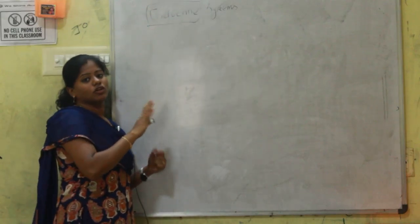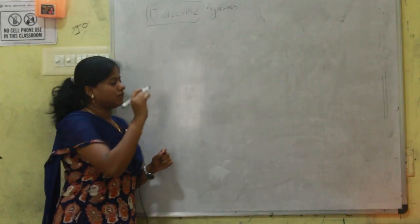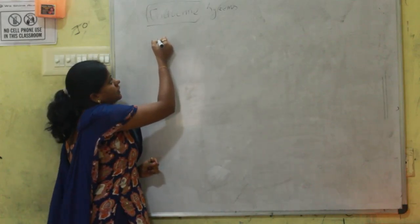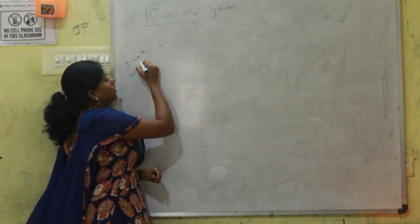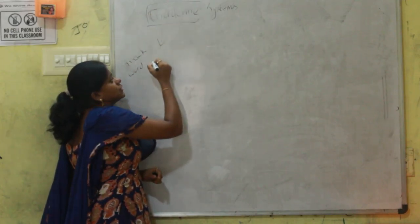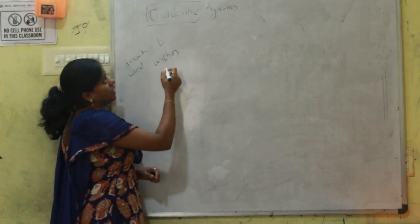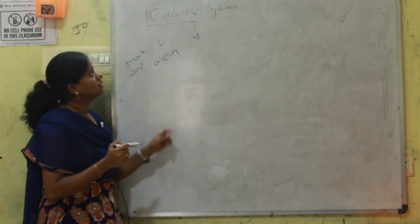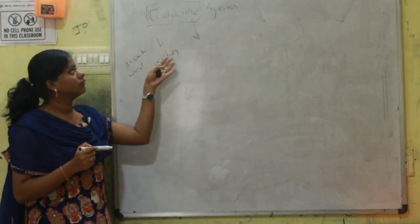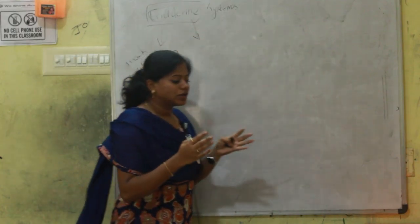Endocrine is actually a Greek word. Endo means within, so present within, and crino means cells. So this endocrine system is present within ourselves.